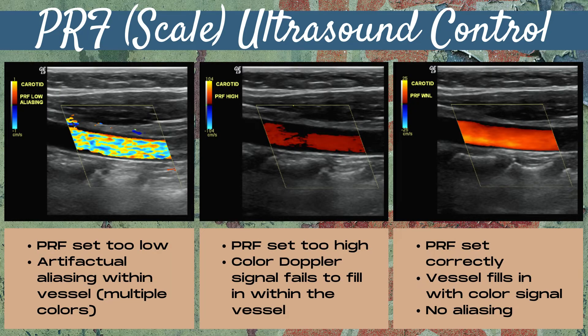Let's look at some color doppler examples of the PRF or scale control. On the image in the far left, you'll see the rainbow of colors within the vessel — this is when the PRF is set too low and artifactual aliasing is occurring because the velocity of the flow is exceeding the Nyquist limit. In the middle image, the PRF or scale control is set too high and color doppler signal fails to fill in within the vessel. On the image to the far right, the PRF is set correctly — the vessel fills in nicely with a color signal and there's no aliasing present.